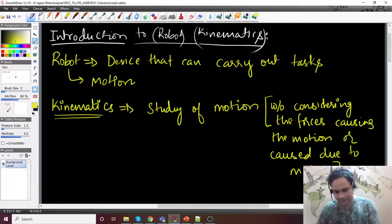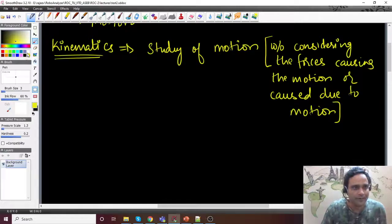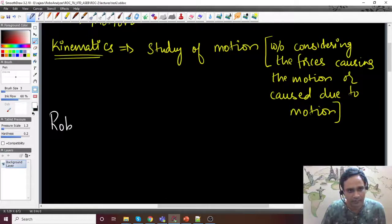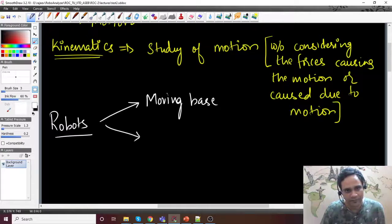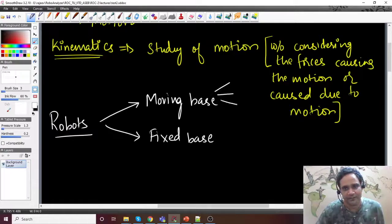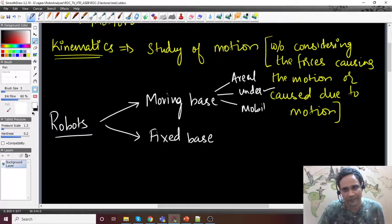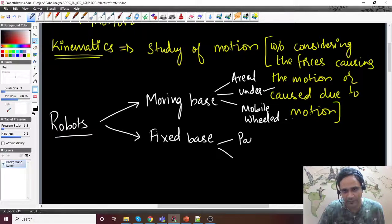Now let us look at different types of robots very briefly. They can be classified as moving base or fixed base. Under moving base, you can have various categories like aerial, underwater, mobile robots or wheeled robots, and so forth. Under fixed base, we will have parallel robots and serial robots.